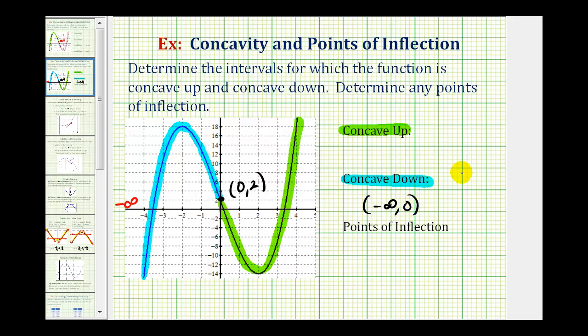Or if we want, we could say when x is less than zero. And the function is concave up from zero to positive infinity, or we could say when x is greater than zero. We don't include zero in the interval because that's where it changes concavity, and that's why the point zero comma two is a point of inflection.